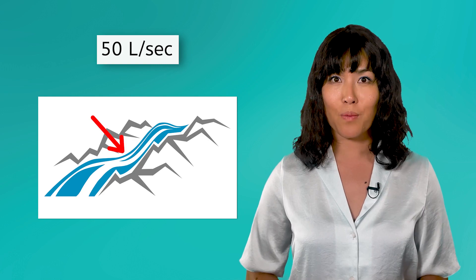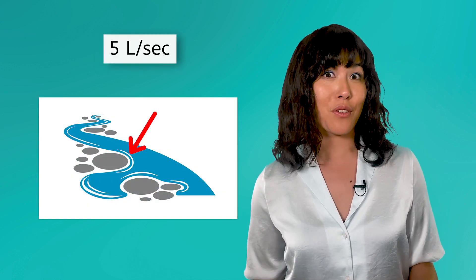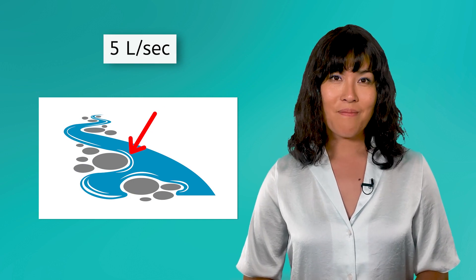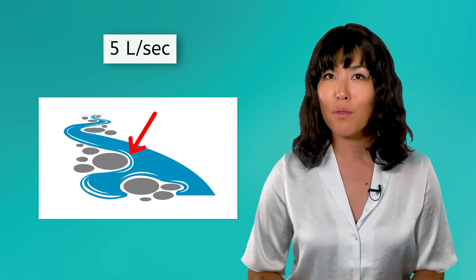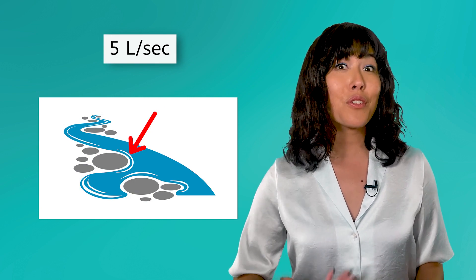If you've ever spent much time around rivers, you know that some parts of the river flow quickly and other parts flow more slowly. We could measure the current of a river by finding out how much water passes a certain point in a given amount of time. Maybe in a fast section of river, 50 liters of water pass our spot each second, while in a slower section, only 5 liters pass each second. This would represent the current of the river, which we can think of as the river's speed.